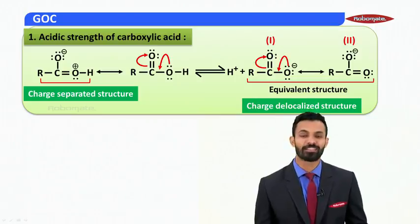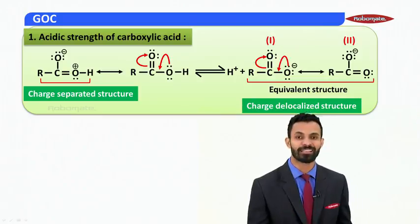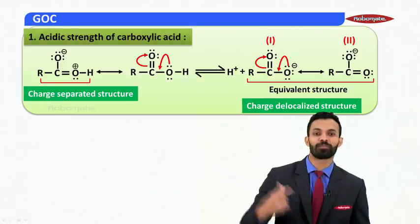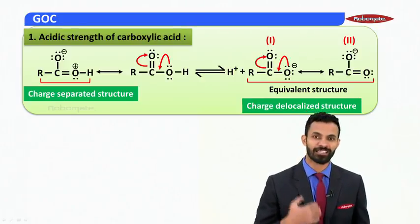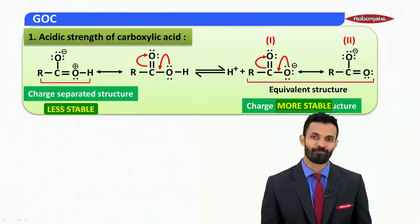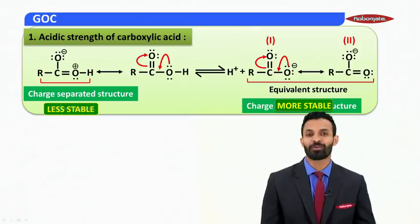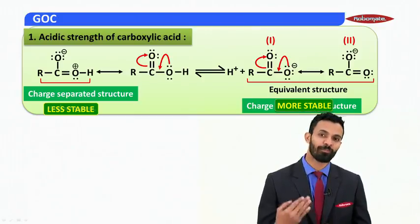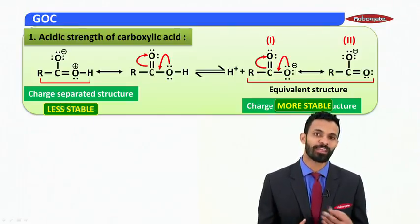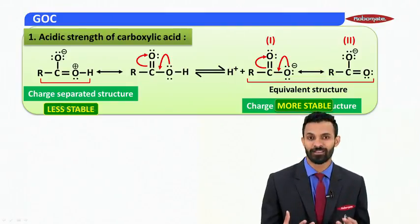Whenever you get a charge-separated structure, it is a relatively less stable structure. On the other hand, a charge-delocalized structure — where only one charge is dispersed over several atoms — is always more stable. Any compound is an acid if its conjugate base is stable. In the case of carboxylic acid, the conjugate base is the carboxylate ion, which gives charge-delocalized structures that are more stable.